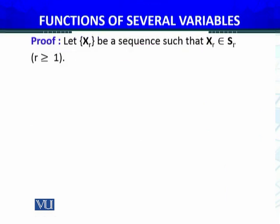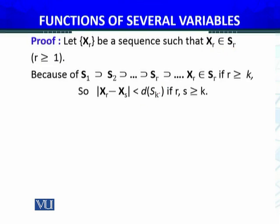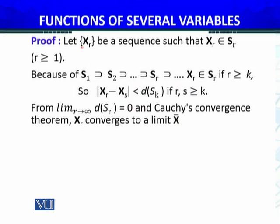Let's go through the proof। Let XR be a sequence such that XR belongs to SR, when R ≥ 1। XR sequence कोई मैंने ले लिया — because this is the condition जो hypothesis में है। XR belongs to SK if R ≥ K, so |XR − XS| ≤ diameter of SK। अब यह diameter किस तरह के हैं — limit K approaches to infinity, this diameter approaches 0 — तो Cauchy convergence criterion से यह XR sequence convergent हो गया।